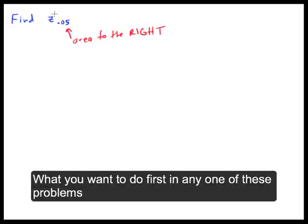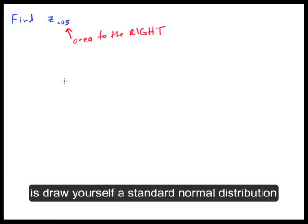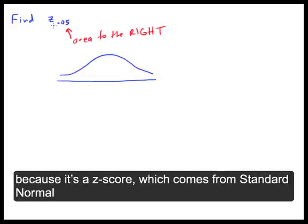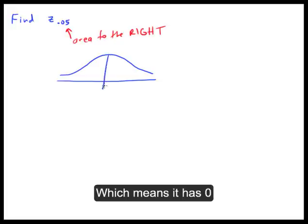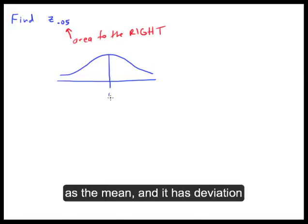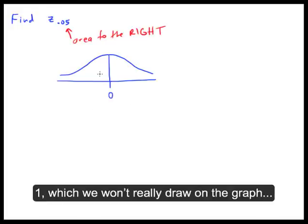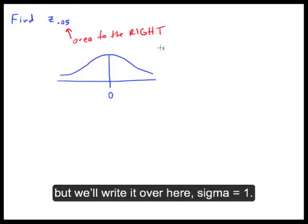So what you want to do first on any one of these kinds of problems — z whatever it might be — is draw yourself a standard normal distribution, because it's a z-score. That comes from the standard normal, which means it has zero as the mean, and then deviation one. Sigma equals one.